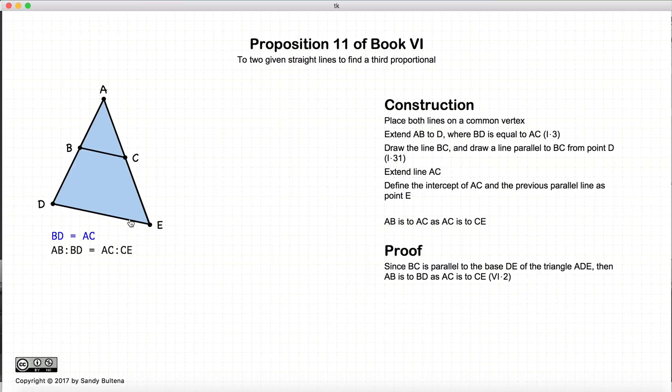According to Proposition 2 of this book, in this situation, the ratio AB to BD will be equal to the ratio of AC to CE.